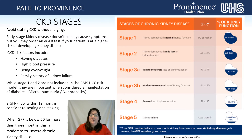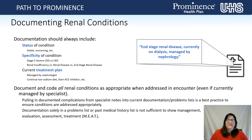Stage 1 and 2 are not included in the risk adjustment model, but if you can stage that chronic kidney disease, that manifestation may help other diagnoses risk adjust. When documenting renal conditions and chronic kidney disease, your documentation should always include the status, the specificity, and the treatment plan. For status: is it stable or worsening? For specificity: is it stage 5 CKD versus CKD stage 3A, or renal insufficiency versus renal disease versus end-stage renal disease? And the current treatment plan, whether managed by a nephrologist or suggesting a low-sodium diet or starting an ACE inhibitor.